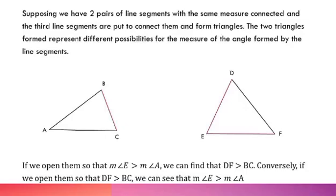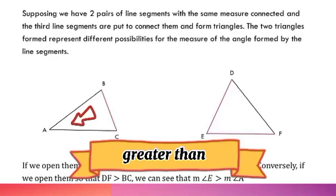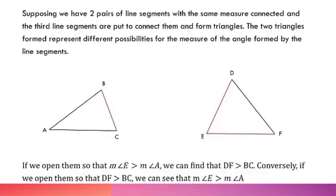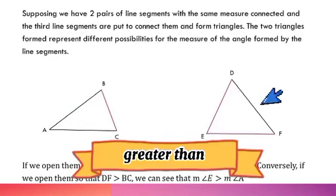We have here triangle ABC and triangle DEF. If we open them so that measure of angle E is greater than measure of angle A, we can find that DF is greater than BC.